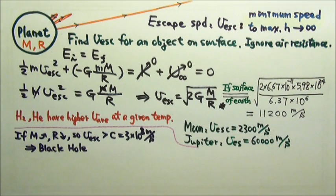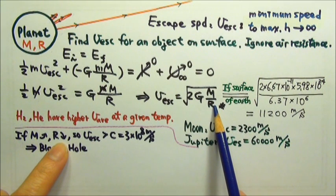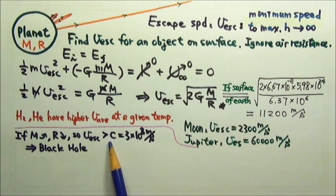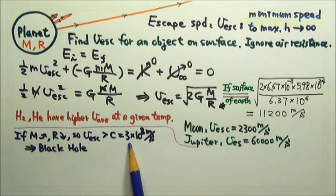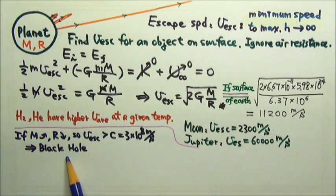For an extremely massive, collapsed star with very large M and very small R, it is possible for the escape speed to be so high that it is more than the speed of light c, 3 times 10 to the 8 meters per second. This means even light cannot escape. Therefore, it appears black and that is why we call it a black hole. Thank you.